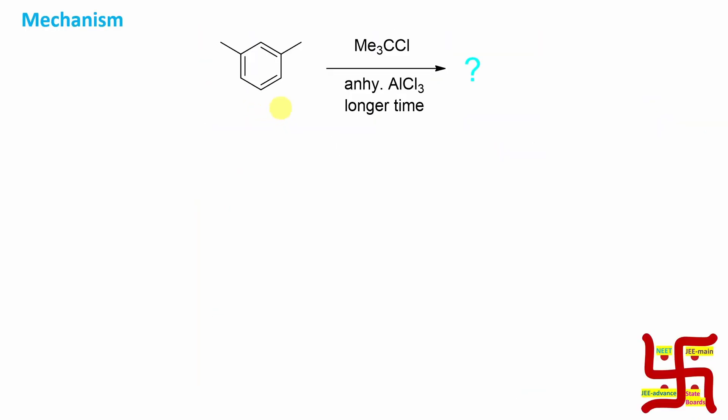Mechanism: if you look at this, the first thing is that reaction of trimethyl chloride - I mean this tertiary butyl chloride - plus AlCl3 will result in a tertiary butyl cation.